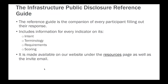Each question that we have, we refer to at GRES as an indicator. These indicators each have very specific guidance that follows them, provided by what we call the reference guide. The infrastructure public disclosure reference guide is available and was sent to you in the email and on our resources page on our website. For each indicator, the reference guide will offer you the intent behind the indicator, the terminology, the definitions, the requirements to fill in the indicator, and how the scoring works for it. It also includes references to the other frameworks that we use — GRES tries very hard to work with the rest of the industry to come up with a concise and well-agreed-upon set of indicators.